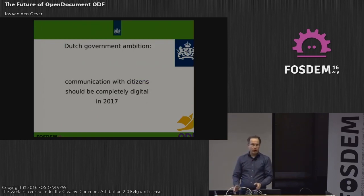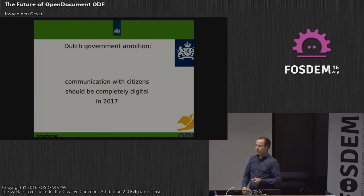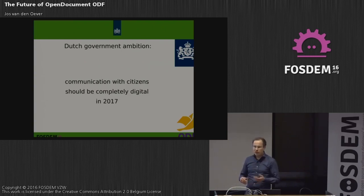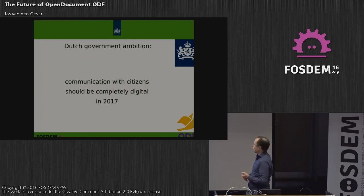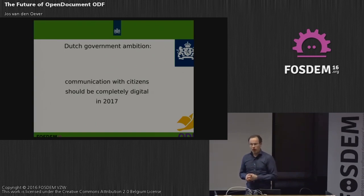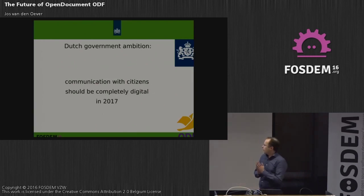The Dutch government has set itself a very ambitious goal: to do all communication with their citizens digitally from 2017. That's a big thing. It's only since a decade that people are carrying slightly powerful mobile phones, and governments are not always known for being very good at software. Setting this goal is very ambitious — I'm not sure if we're going to make it, but at least we're going to try.